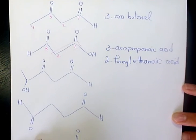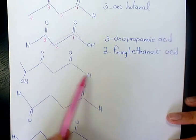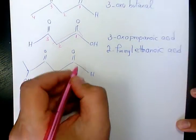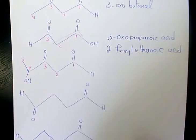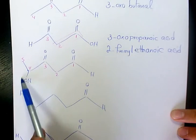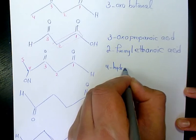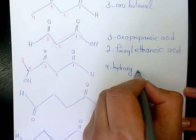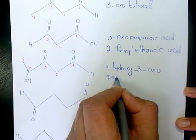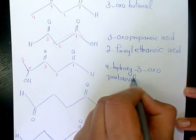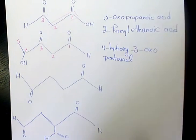The next one has an aldehyde, a ketone, and a hydroxy group. We start numbering from the aldehyde end: one, two, three, four, five. We have oxo and hydroxy — hydroxy comes first alphabetically, so it's 4-hydroxy-3-oxopentanal. Again, it ends with '-al', the suffix for aldehyde.